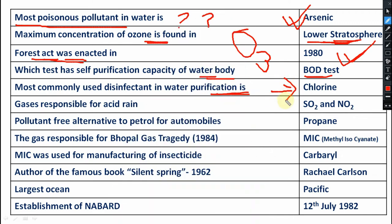Gases responsible for acid rain — this question generally comes in any kind of exam: SSC, UPSC, OPSC, whatever competitive exams, from the environmental aspect. Which gases are responsible for acid rain? That is SO2 and NO2.